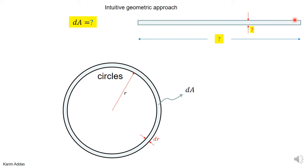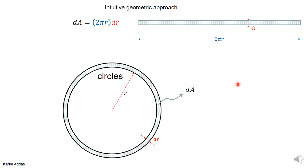What would the length of the rectangle be? The length is the circumference of the circle, which is 2πr. The thickness is just dr. So using this idea, the area between the two circles is simply 2πr times dr — a simple, intuitive way of finding the area between the two circles.